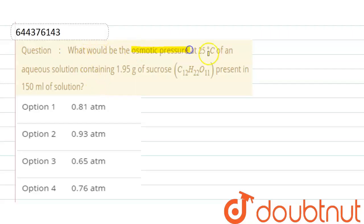What would be the osmotic pressure at 25 degrees Celsius of an aqueous solution containing 1.95 gram of sucrose present in 150 milliliter of solution? Okay, so here we have to find out osmotic pressure and the formula of osmotic pressure